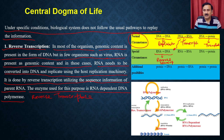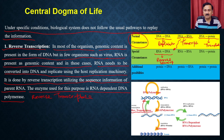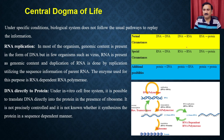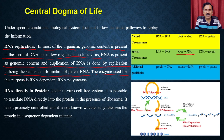Another special case is RNA-dependent RNA synthesis, called RNA replication. In most organisms the genomic content is DNA, but in some organisms such as viruses, RNA is present as the genomic content and is replicated utilizing the sequence information of the parent RNA. The enzyme used for this purpose is called RNA-dependent RNA polymerase. There is also the case of DNA directly synthesizing protein — DNA-dependent protein synthesis — which occurs in an in vitro cell-free system in the presence of ribosomes, bypassing RNA entirely.